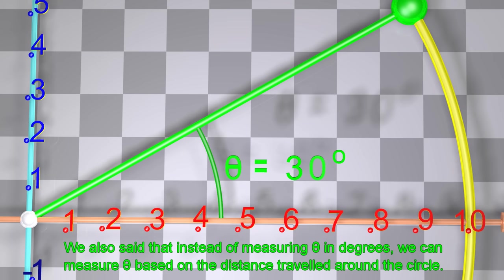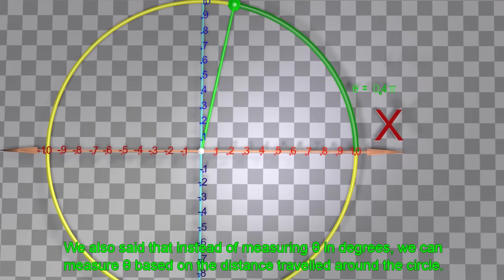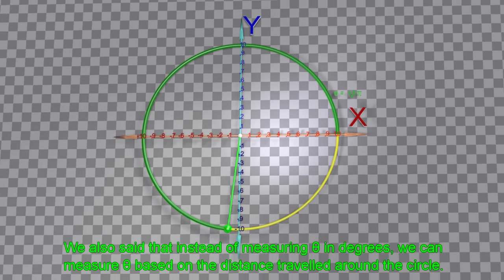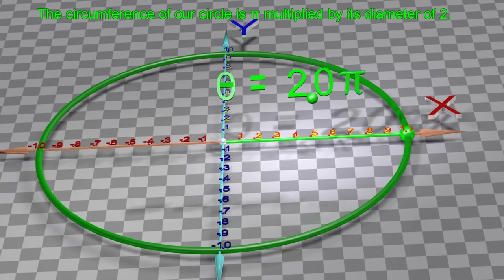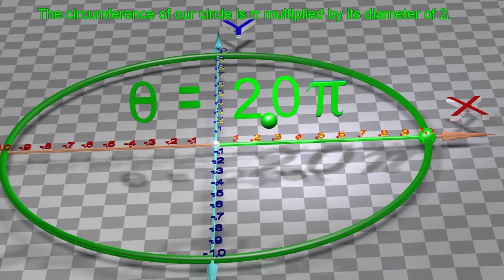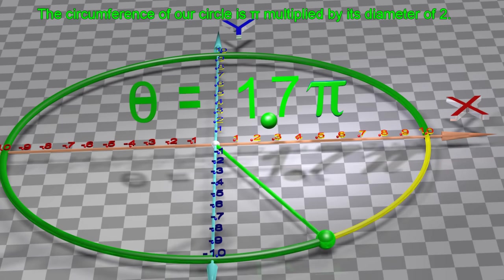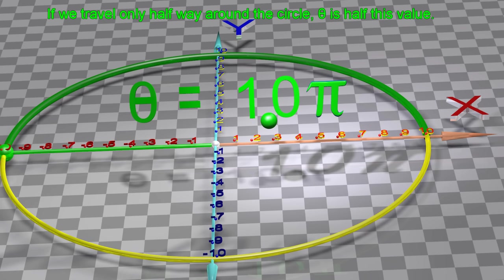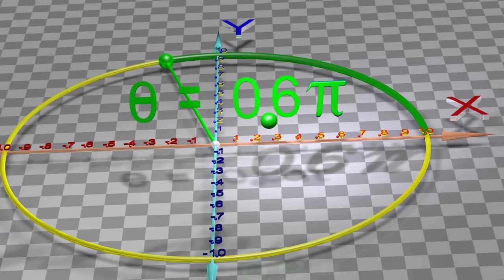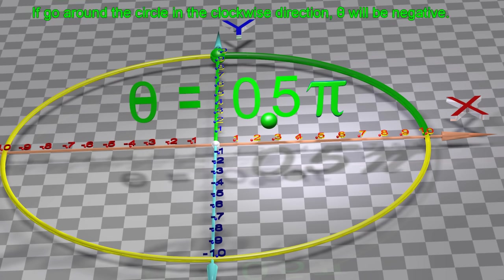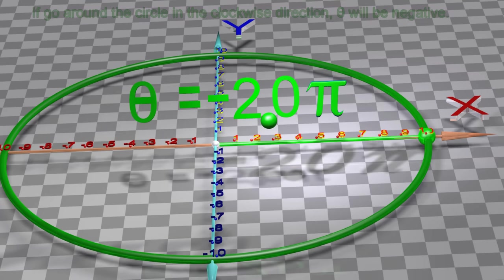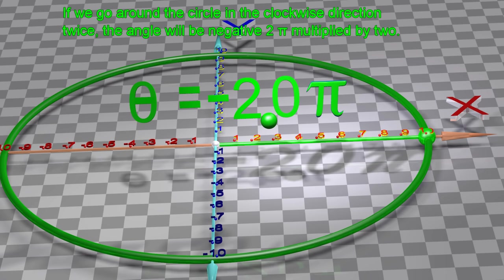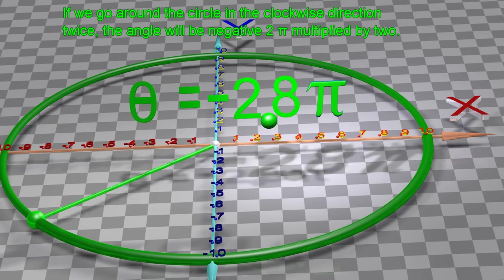Instead of measuring theta in degrees, we can measure theta based on the distance traveled around the circle. The circumference of our circle is pi multiplied by its diameter of 2. If we travel only halfway around the circle, theta is half this value. If we go around the circle in the clockwise direction, theta will be negative. If we go around the circle in the clockwise direction twice, the angle will be negative 2π multiplied by 2.